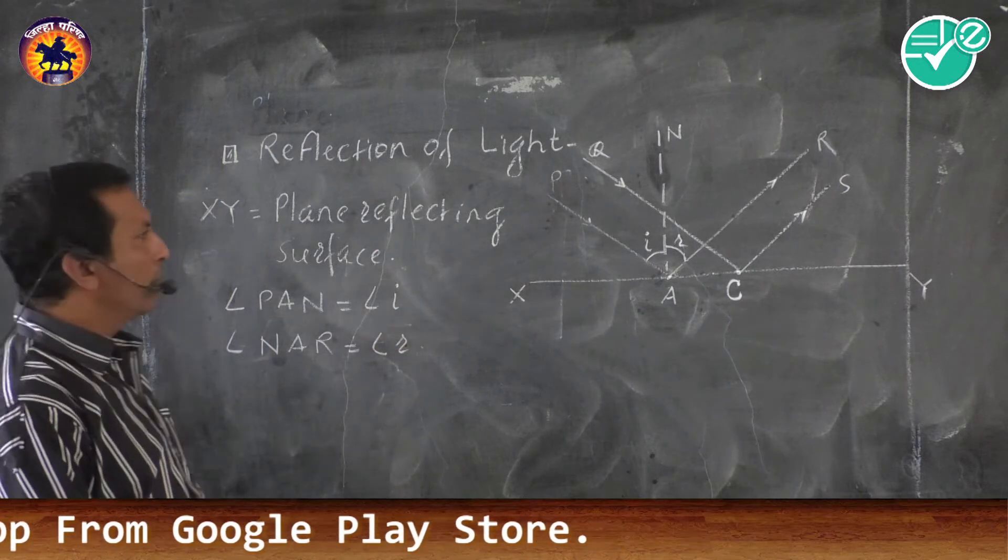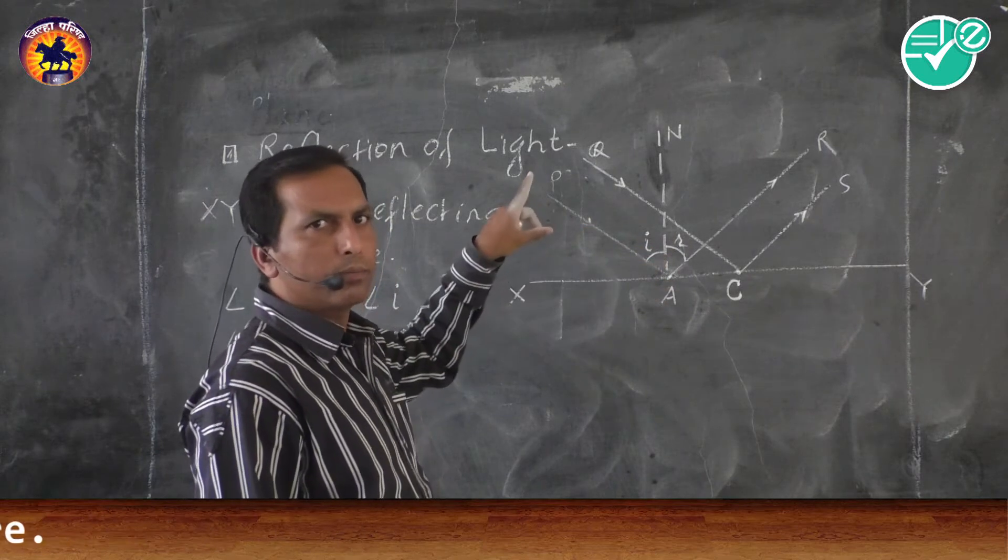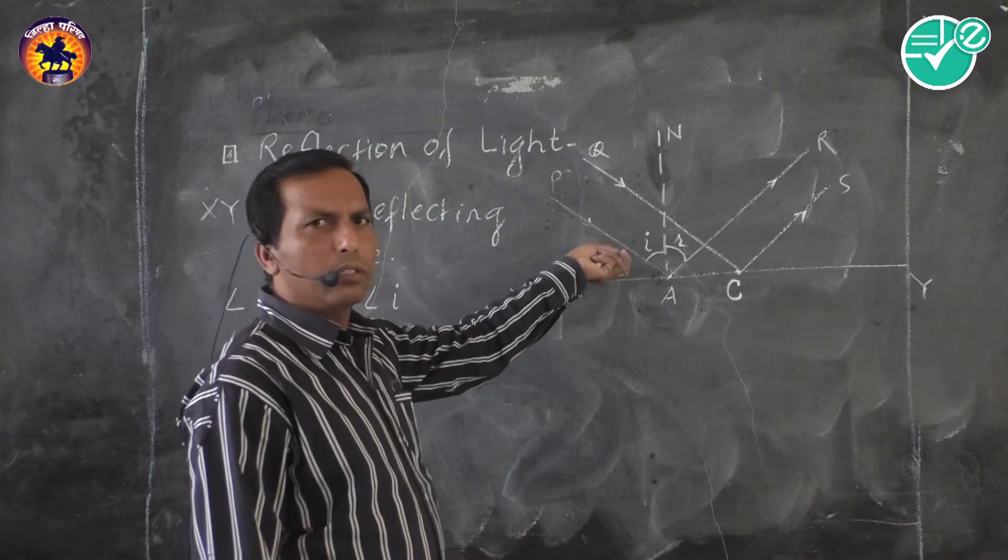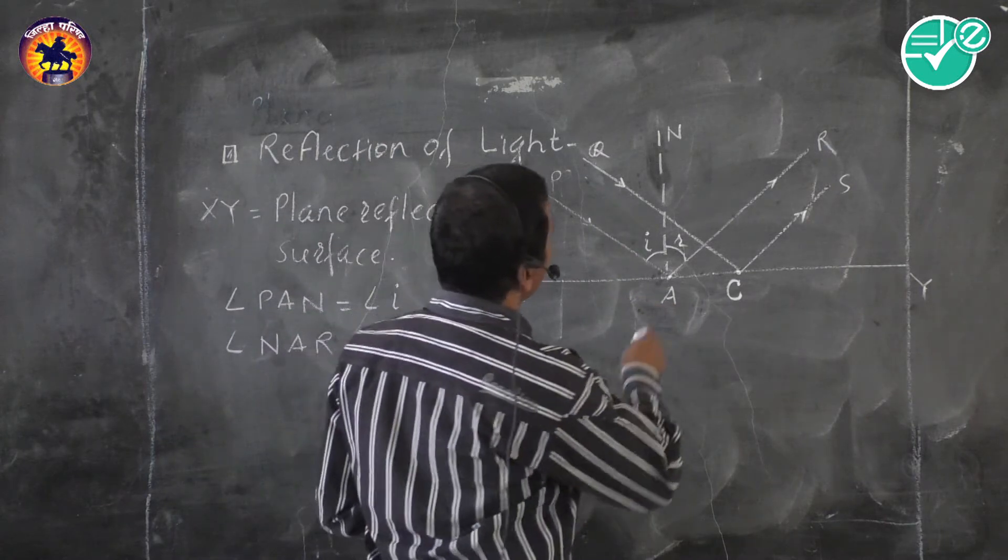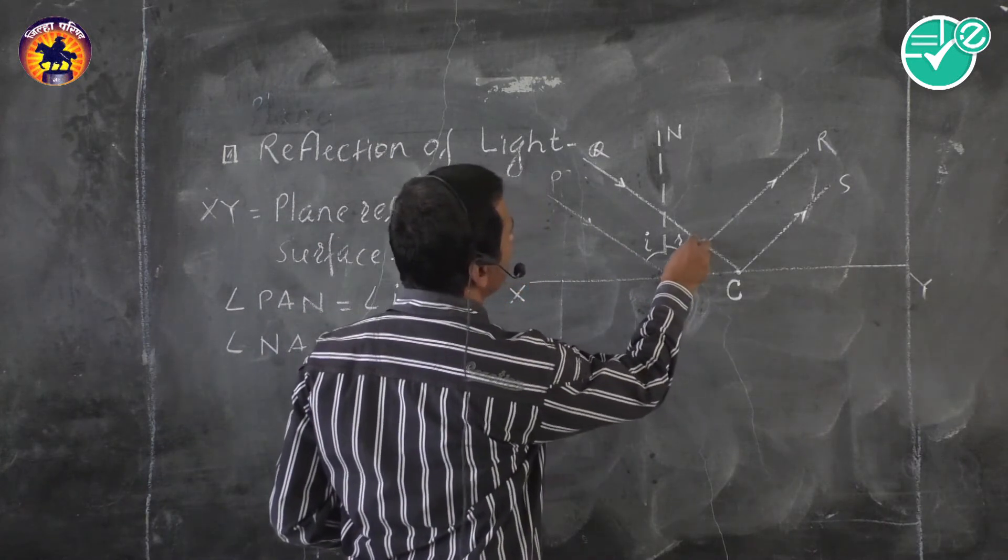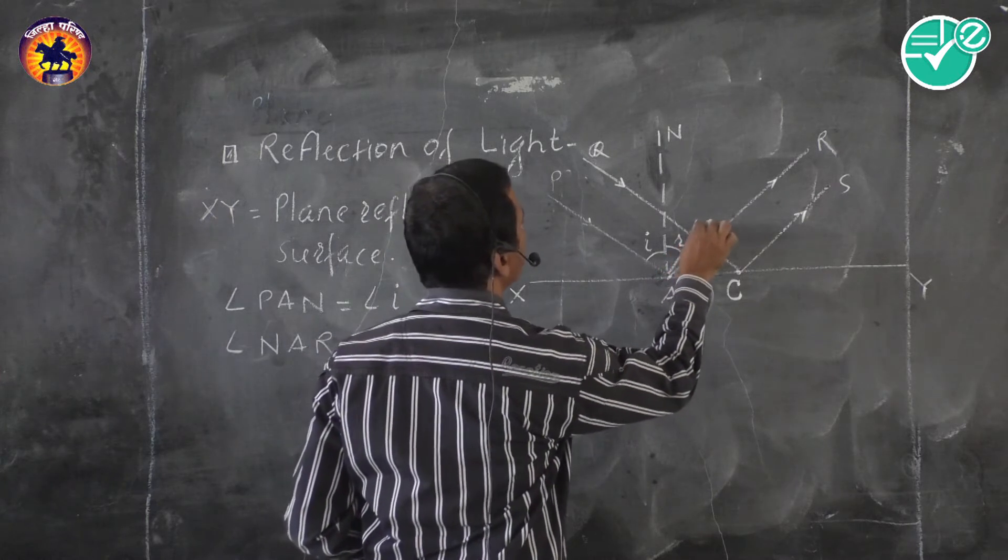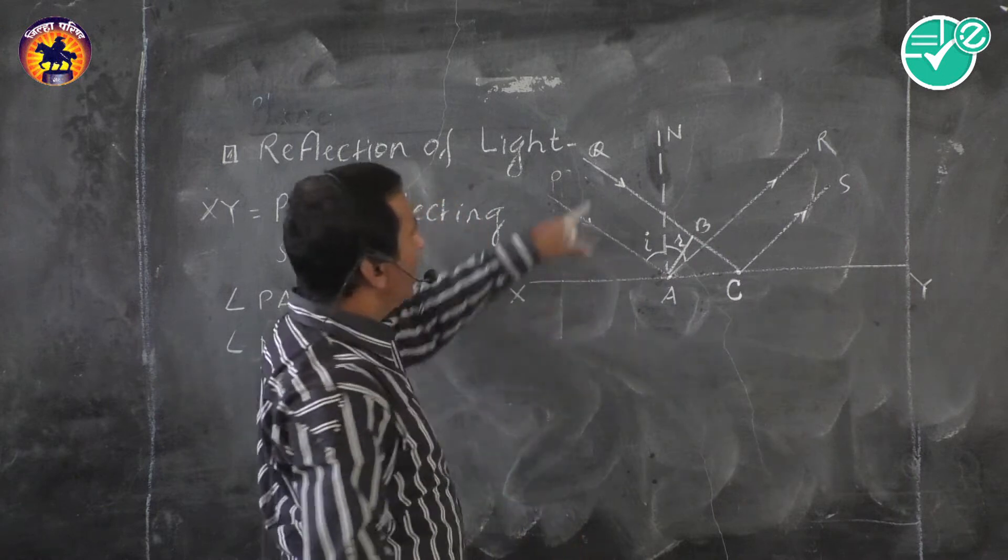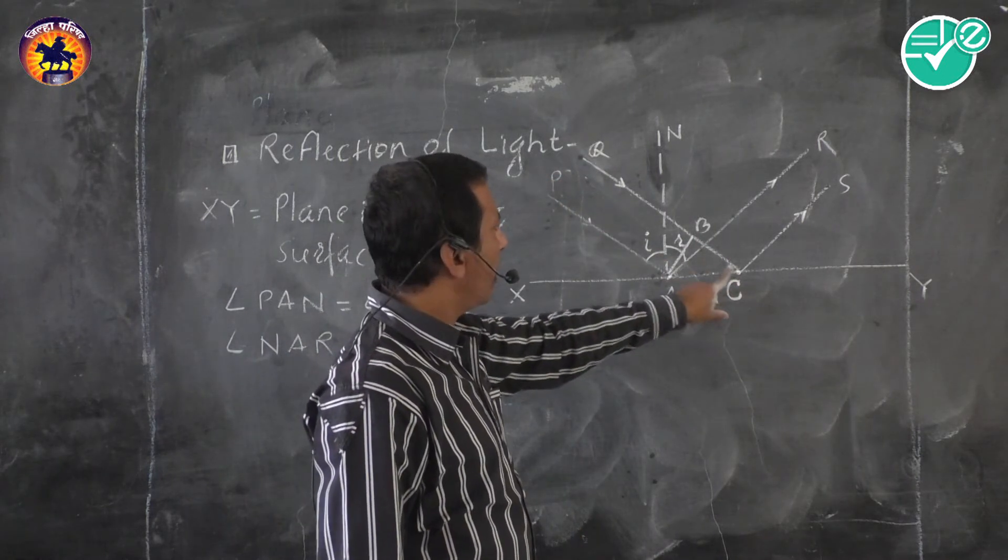And we have to prove angle of reflection is equal to angle of incidence or angle of incidence is equal to angle of reflection. So for this, let us draw a perpendicular line AD on incident ray QC at point B.